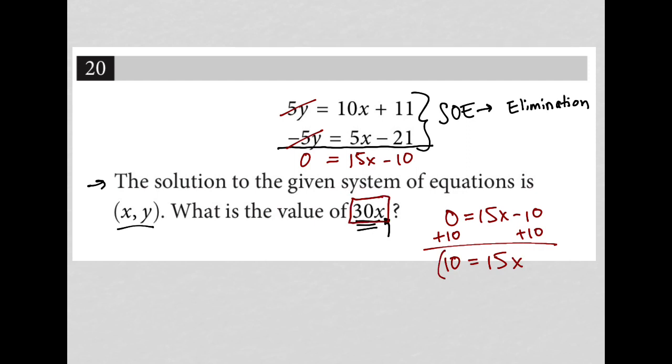Well, isn't it true that if I just multiply both sides by 2, I would actually get the value for 30x? If I multiply by 2, I get 2 times 10 is 20. I multiply by 2, I get 2 times 15x is 30x. So this statement tells me that 30x is actually equal to 20, and therefore my answer is 20.